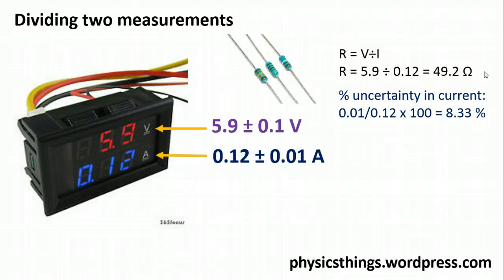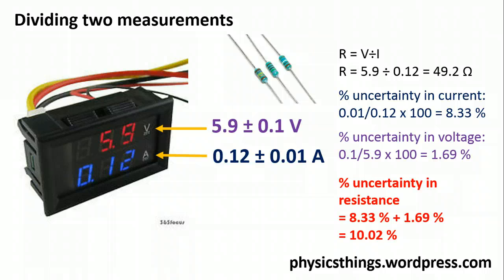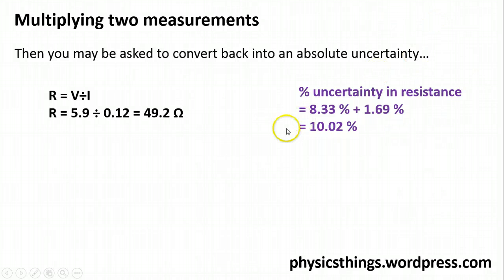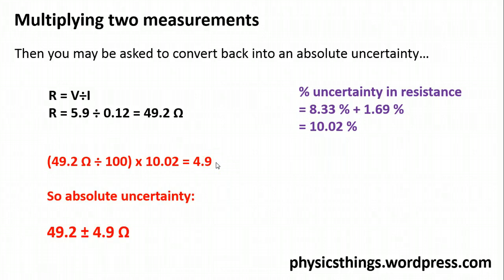The percentage uncertainty in current was 8.33% and in voltage 1.69% — just as before, we add them together to get a combined percentage uncertainty of 10.02%. Applying that to our resistance result: 49.2 ÷ 100 × 10.02% gives 4.9 Ω as our absolute uncertainty. So the resistance is 49.2 ± 4.9 Ω — our calculated value plus or minus the absolute uncertainty obtained from the percentage.